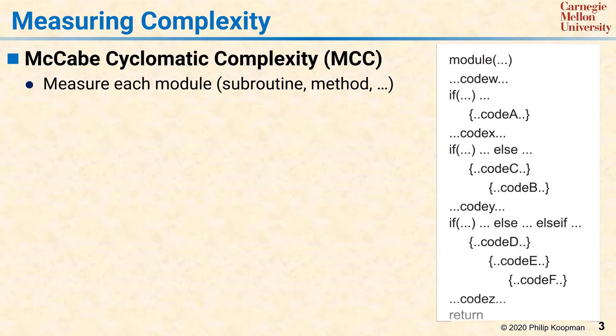First, reorganize your code so that different basic blocks of code are apparent. A basic block is a segment of code with a single entry point and a single exit point. The idea is that once you figure out what a basic block is, when you execute it, you're going to execute all those lines of code together every time.